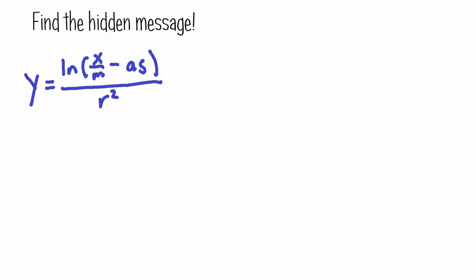Hello everybody and welcome back to another math learning video. Today we have this equation here and what we need to do is find the hidden message. There's some message hidden in this equation: y equals ln of x over m minus a times s, all over r squared, and we need to find that message.